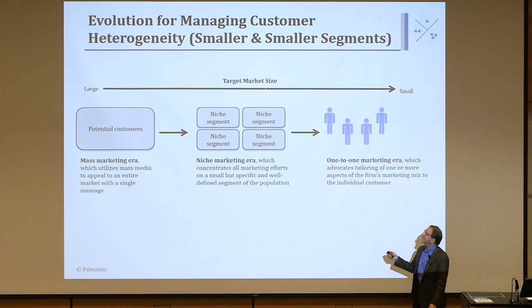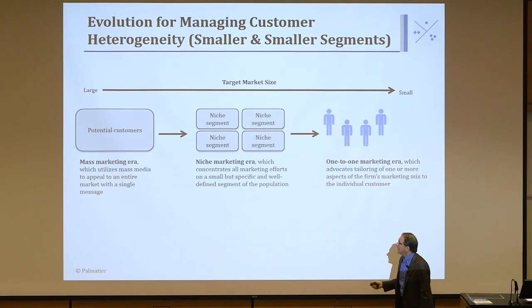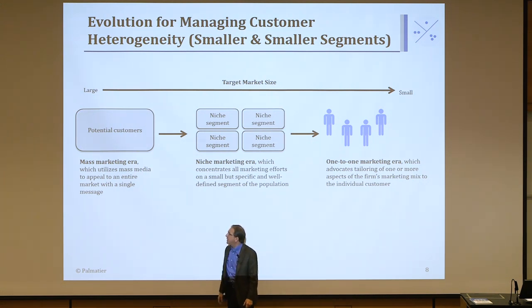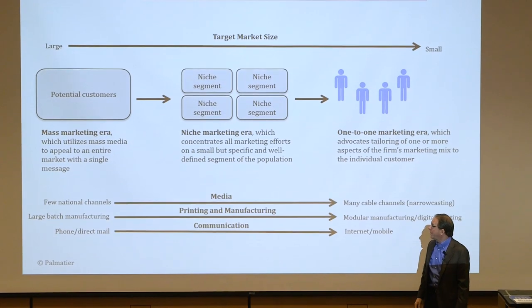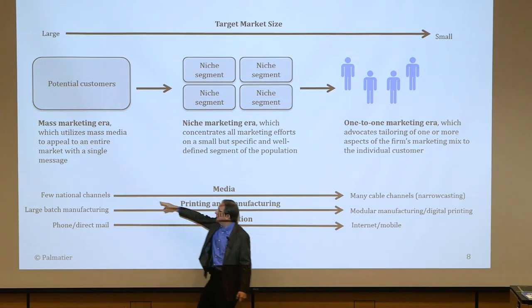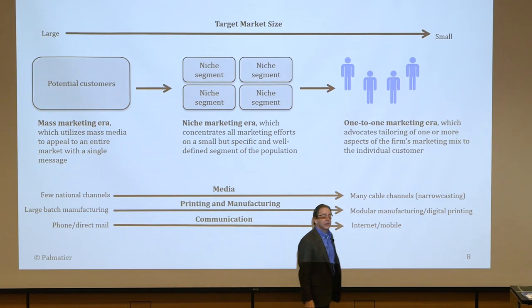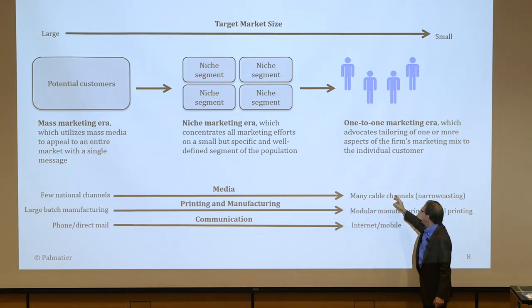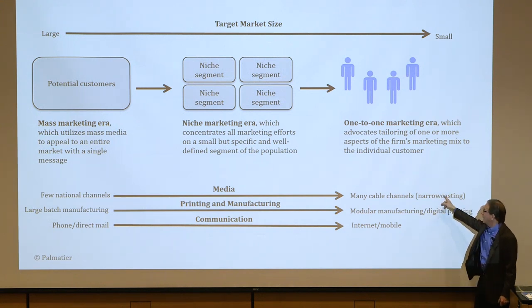Looking at the evolution, we begin with the mass marketing era, which utilized mass media to reach the entire market. This really began when TV broadcasting came out. At one time there were only three TV channels, so if you sold soft drinks or soap you could reach pretty much the whole TV-watching public across just three channels. But over time there are now hundreds if not thousands of cable channels, and with the internet even more — what we call narrow casting.